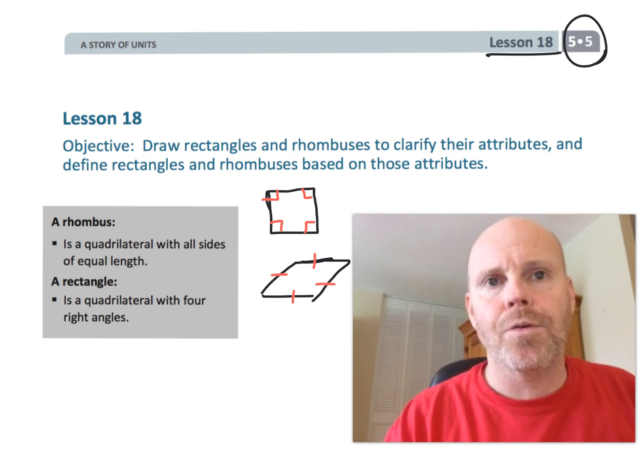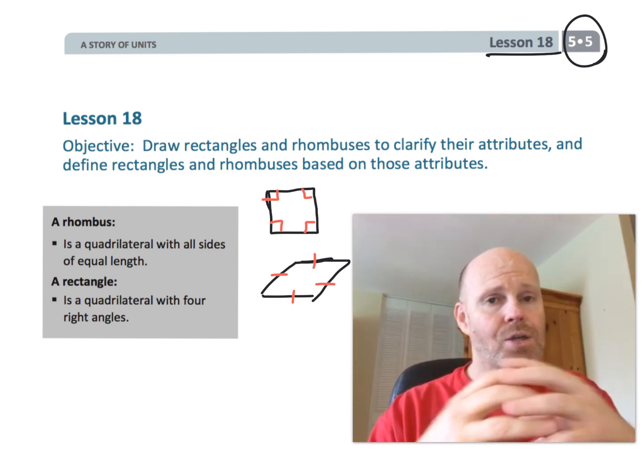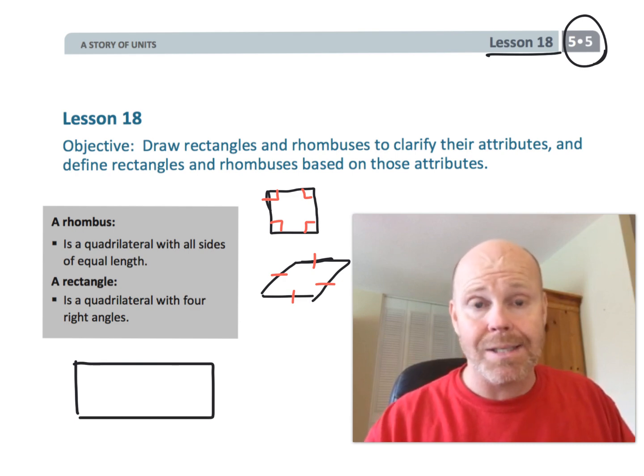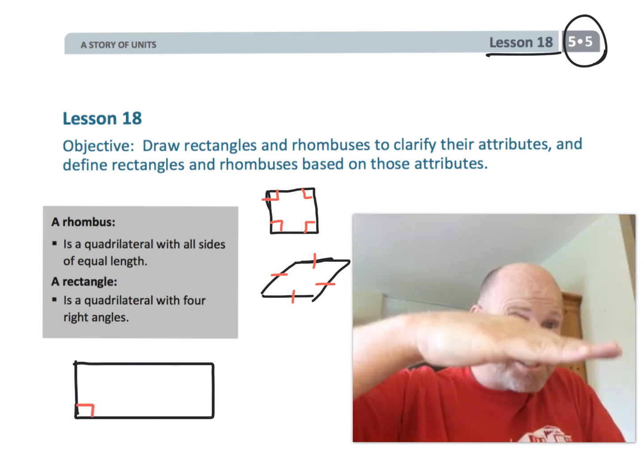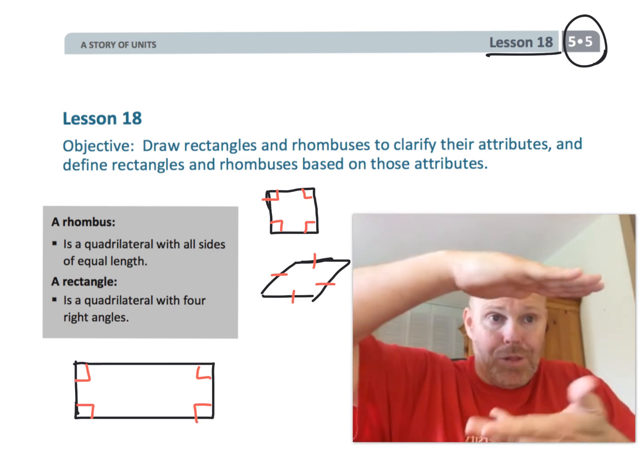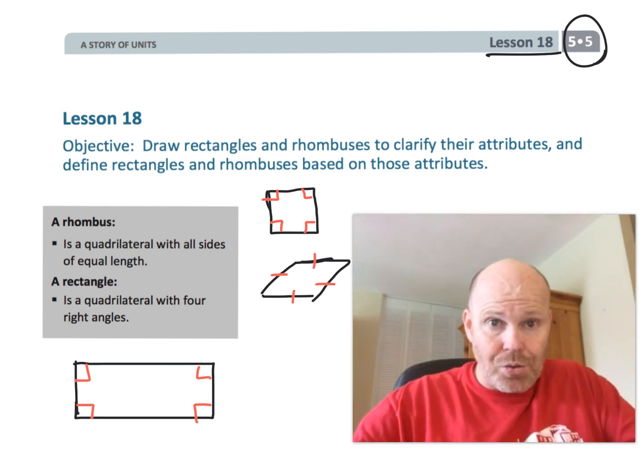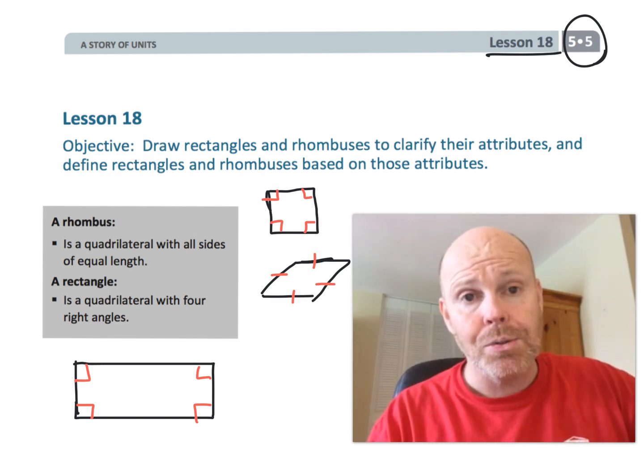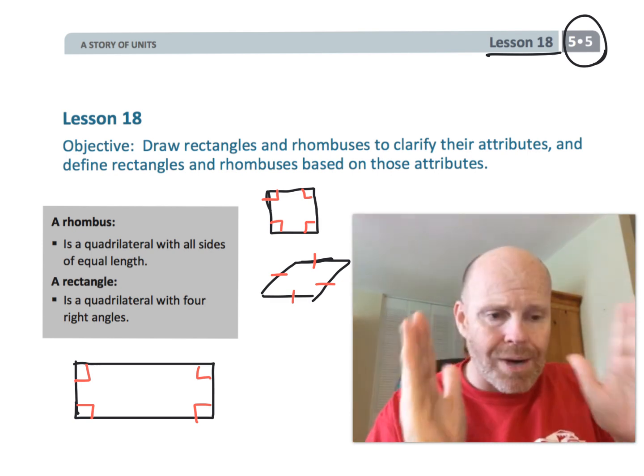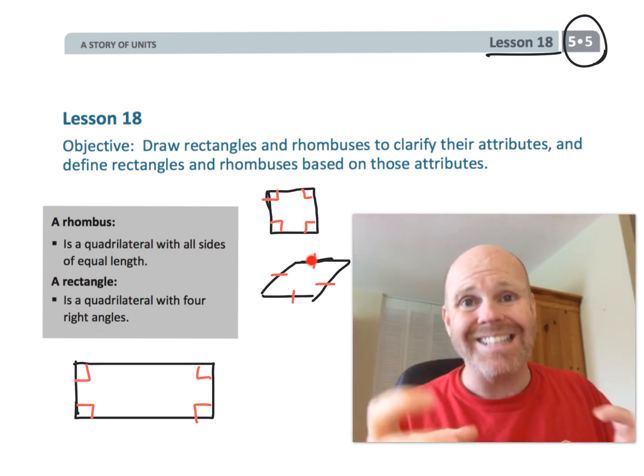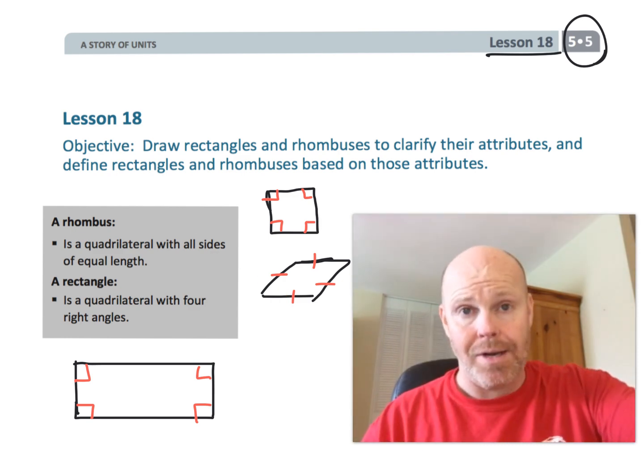Rectangle, more familiar for most of our fifth graders, is a quadrilateral with four right angles. That's the definition of a rectangle. Oftentimes we say two of the lines are parallel, the other two are parallel, these two are equal and these two are equal. But that's extra information that we don't have to include. A rectangle is a quadrilateral with four right angles. A rhombus is a quadrilateral where all four sides are the same length.